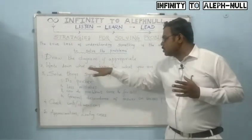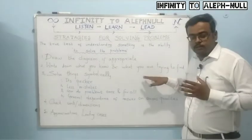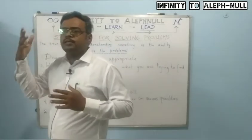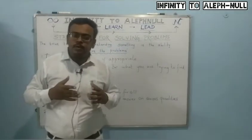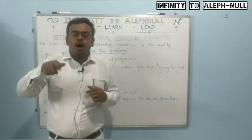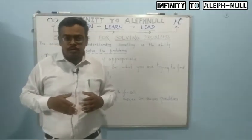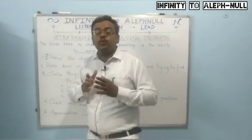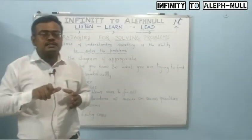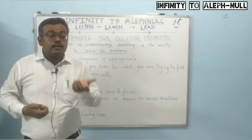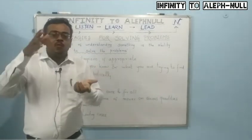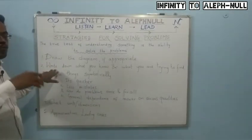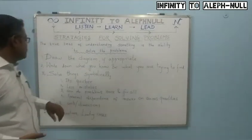The second strategy is to write down what you know and what you are trying to find. In a simple problem you can do this roughly in your mind, but in a complicated problem you must write everything down explicitly. For example, if there are three unknown quantities and you have written down two facts from the given data, it clearly implies that one thing is still missing and needs to be found.